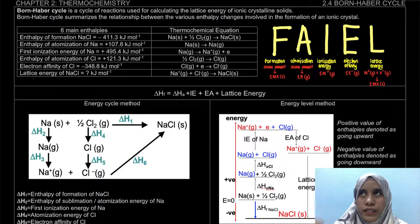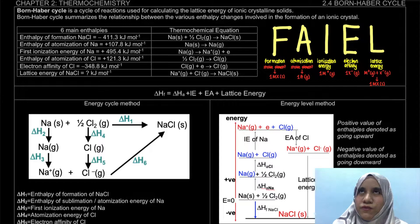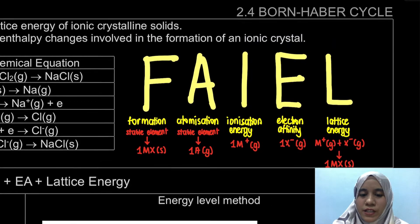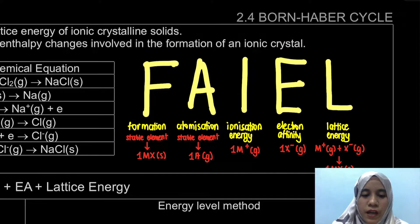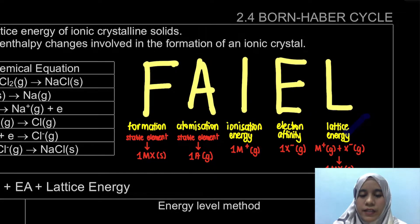So what are actually the various enthalpy changes involved? Here is the acronym: FAILE. F stands for formation, A stands for atomization, I stands for ionization energy, E stands for electron affinity, and L is lattice energy.